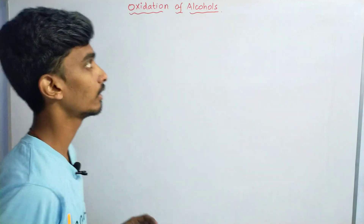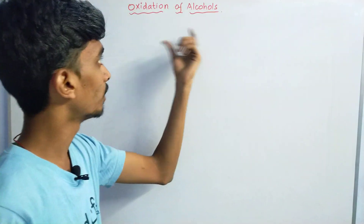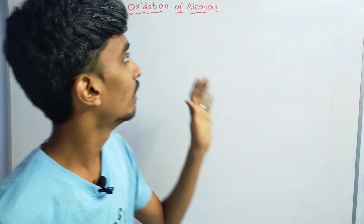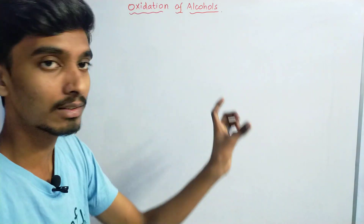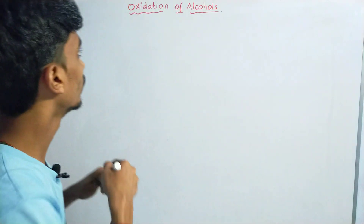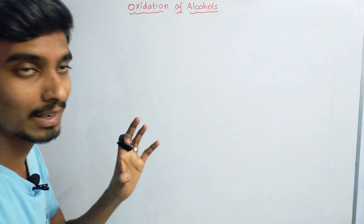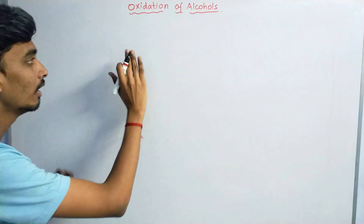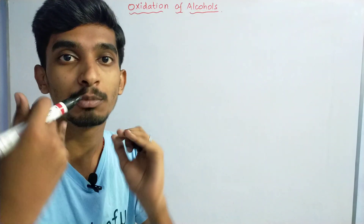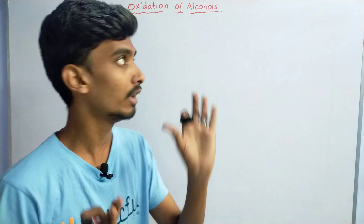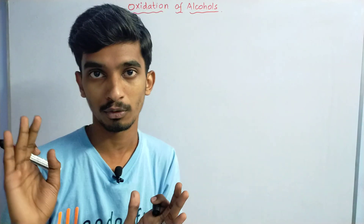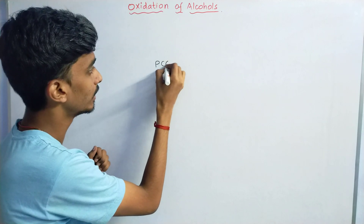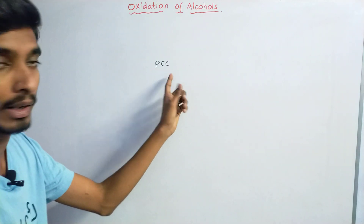In this video we are going to see about the topic of oxidation of alcohols. Alcohols are oxidized using oxidizing agents. Oxidizing agents are compounds that oxidize other compounds. For example, PCC — pyridinium chlorochromate — is an oxidizing agent.